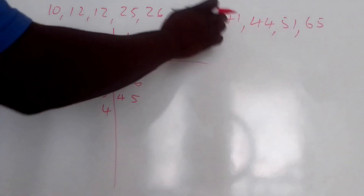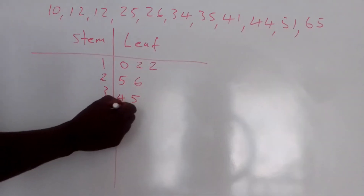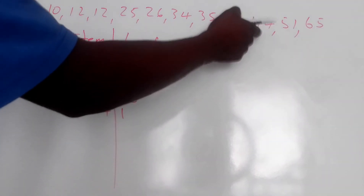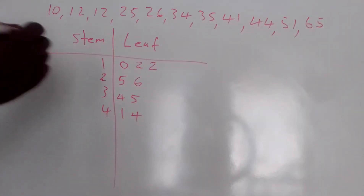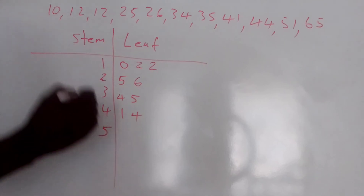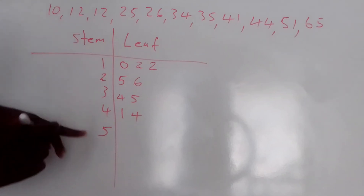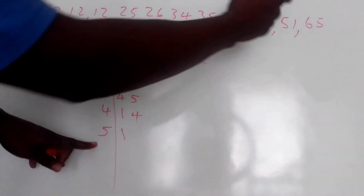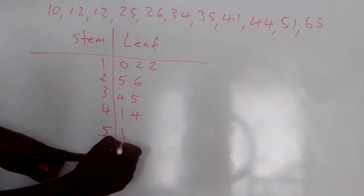Now I'm going to write 41, so I write 4 under the stem and 1 under the leaf. For 44, I put another 4 under the leaf. Now for 51, I write 5 under the stem and 1 under the leaf. For 65, I write 6 under the stem and 5 under the leaf.